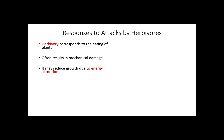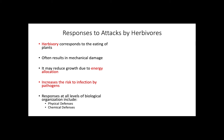Plants are at a constant risk of being eaten by different organisms known as herbivores. Herbivory often results in mechanical or physical damage, reducing plant growth because plants may allocate energy to defend against herbivores. Furthermore, the mechanical damage caused by herbivory opens portals for infection by different pathogens like viruses and bacteria. In response to herbivory, plants can show physical and chemical defenses, covering all levels of biological organization, from molecules to communities.